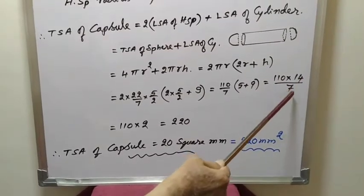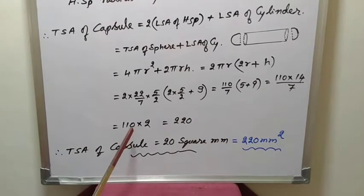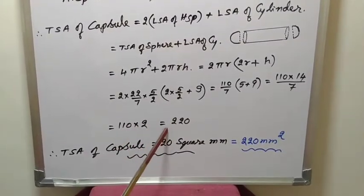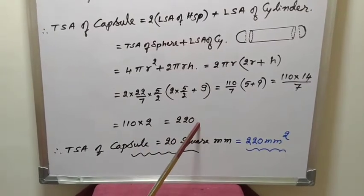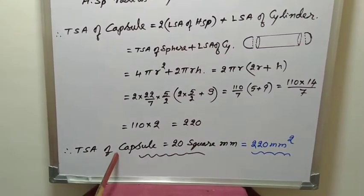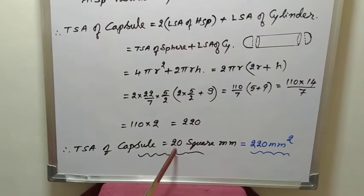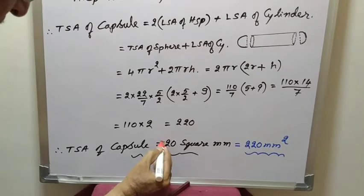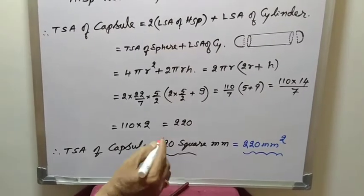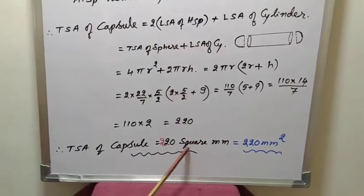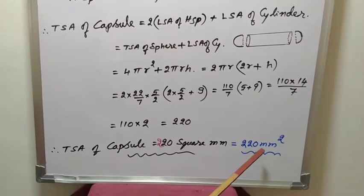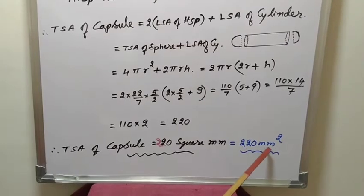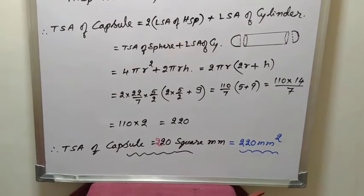7 twos are, so 110 into 2 equals 220. Therefore, total surface area of capsule equals 220 square millimeters. We can write instead of words in symbol also, 220 millimeter square.